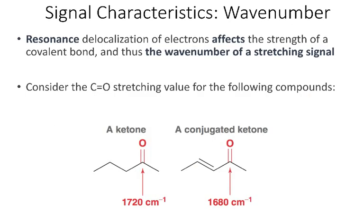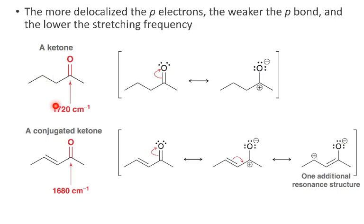Another factor affecting IR frequencies is resonance. Comparing a simple ketone to a conjugated ketone, the C–O stretch actually has slightly different vibrational frequencies. The simple ketone has two resonance structures, mixing in a little single-bond character. The conjugated ketone has an additional resonance structure, giving the resonance hybrid more single-bond character between the carbon and oxygen. Since double bonds have higher frequencies than single bonds, more single-bond character in the resonance hybrid results in a shift to a slightly lower frequency.